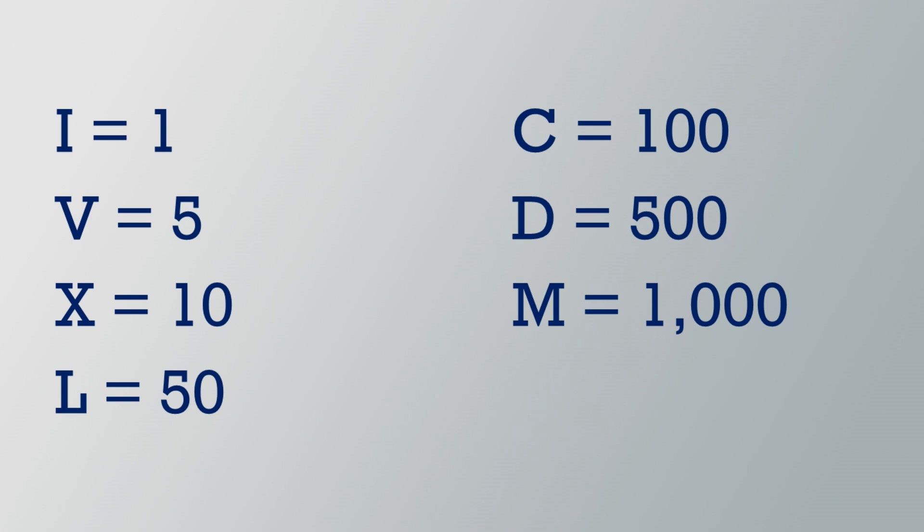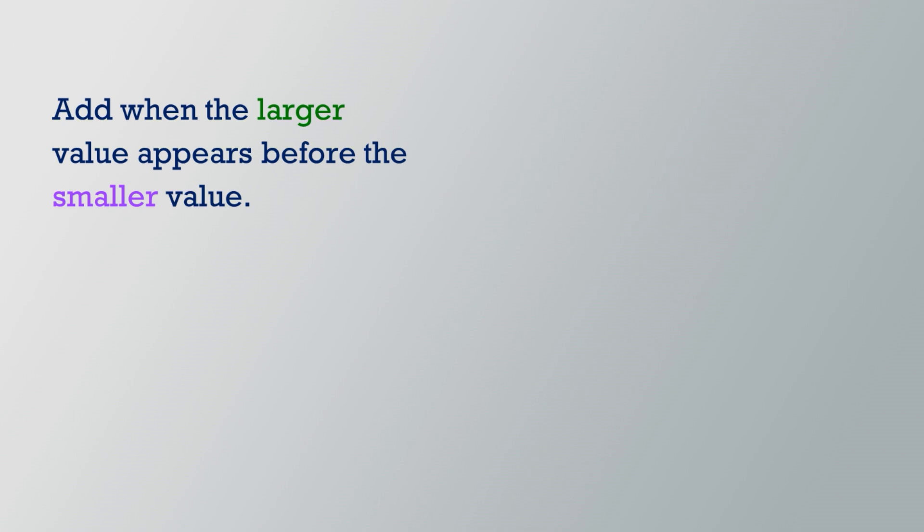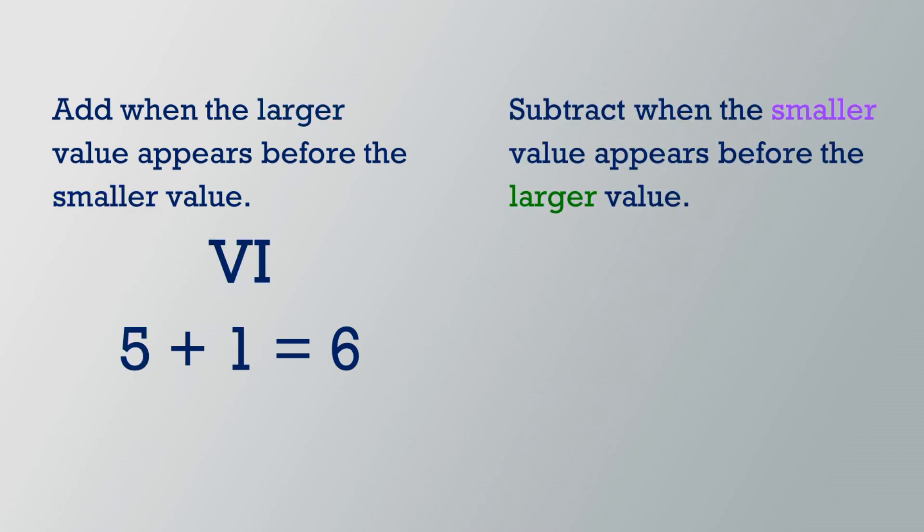When there are several symbols written side-by-side, you combine them using addition or subtraction. When the symbols appear written with the larger value before the smaller values, we will add. For example, VI means 5 plus 1 equals 6. If a symbol for the smaller value appears before the larger value, we will subtract. IV means 5 minus 1 equals 4.